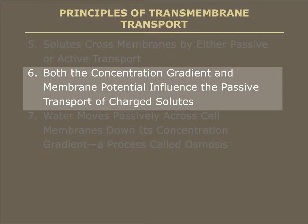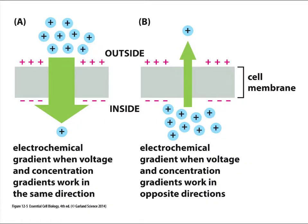Two elements combined together are important when examining what will happen around a membrane: the concentration gradient — the chemistry — and the membrane potential — the physics. Both combined will influence which way and by how much ions will move if permitted by the cell. Students need to remember that for the vast majority of cells in nature, the overall charge on the outside of the cell is generally more positive than on the inside. For a bacterium the numbers may be one set, and for a human kidney cell the numbers may be completely different, but the outside will still be positive relative to the inside.